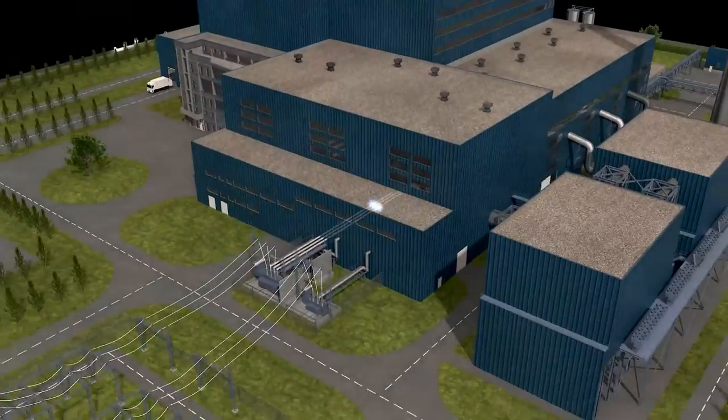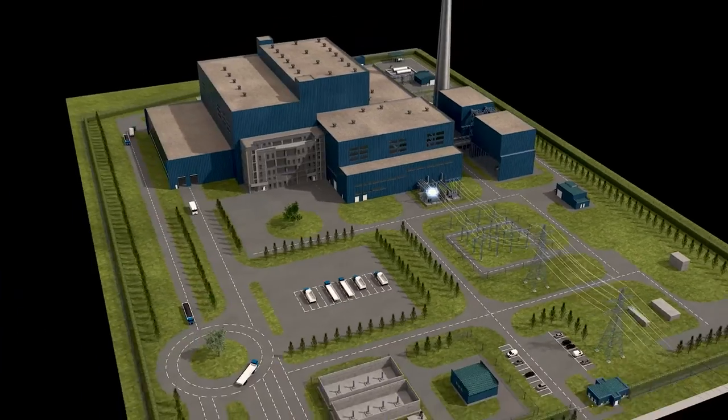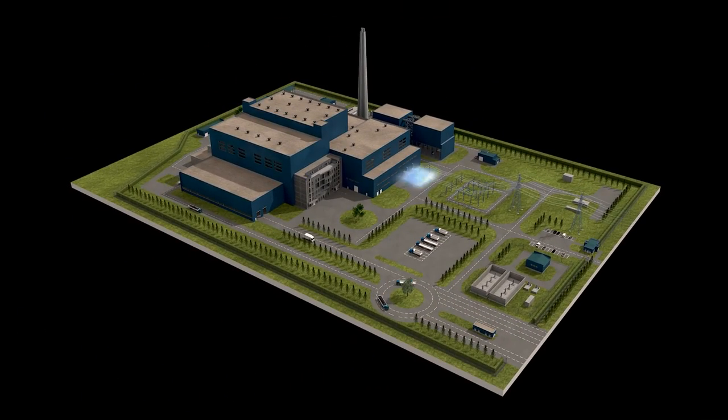Part of the electricity generated supplies the plant, while the rest is fed into the grid as baseload energy to support grid stability.